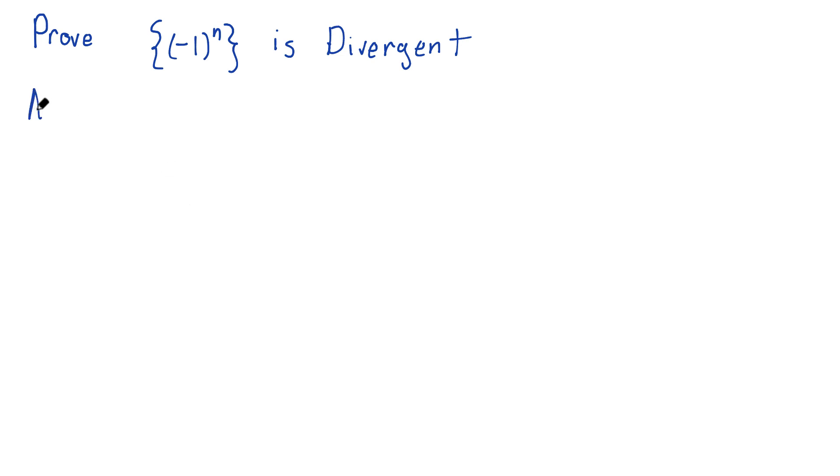So I'm going to assume a limit does exist. So assume that L equals this limit, the limit as n goes to infinity of minus 1 to the n.